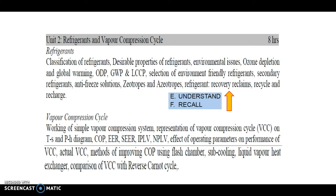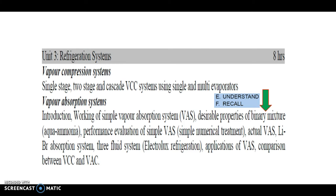In class, more focus will be on the vapor compression cycle and all the contents given in the syllabus. Unit 3 covers the vapor compression system, including single-stage, two-stage, and cascading of vapor compression cycle systems using single as well as multi-evaporators. The vapor absorption system is part 2 of Unit 3, and except for the numerical part, the different types of absorption systems, their applications, and comparison with vapor compression cycles are at the lower levels of Bloom's taxonomy.